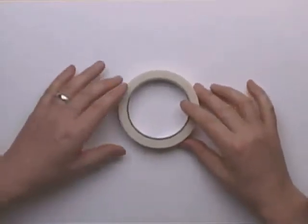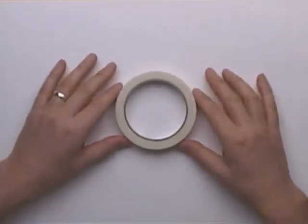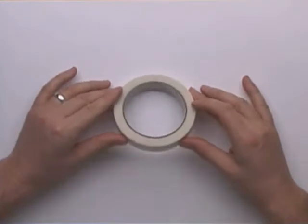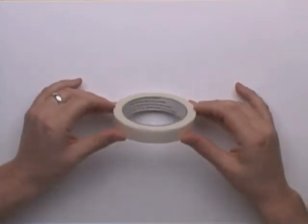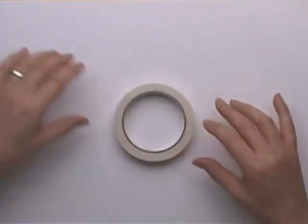All right. Let's move on to ellipses. Ellipses present one of the largest problems for people who are just starting to learn how to draw. An ellipse is basically a circle that is seen at an angle.